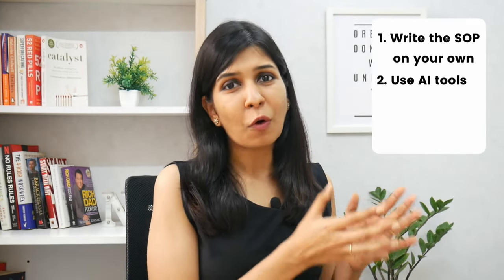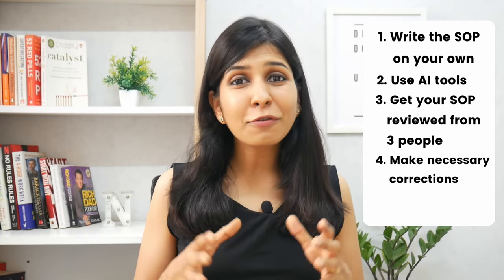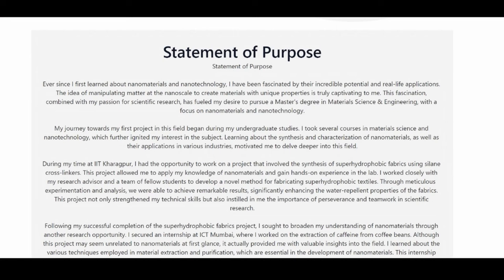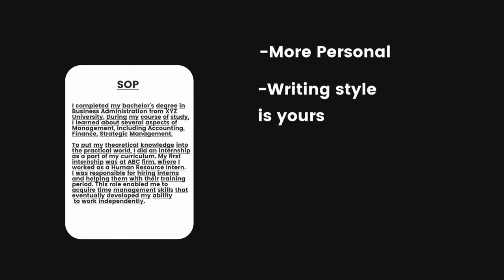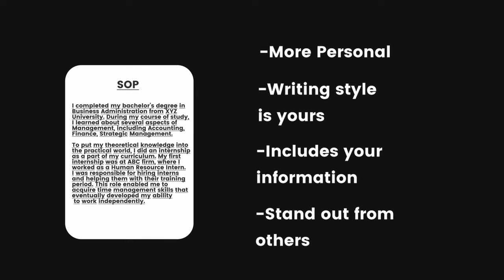Now, once you've done all this process and you have an SOP which you feel is the best version of what you could have produced, what you need to do is send it to three reviewers. Choose reviewers who have some basic idea of what goes in an SOP and have a decent command over English. Ask them to review your document and suggest feedback. Based on their suggestions, you make all those changes in the SOP. After you've done all this, you will have an SOP which is ready for submission. This is clearly not the shortcut SOP you could have generated in five minutes with an AI tool, but this SOP is more personal, has your own writing style, includes information that you want to communicate, and will help you stand out from other applications.